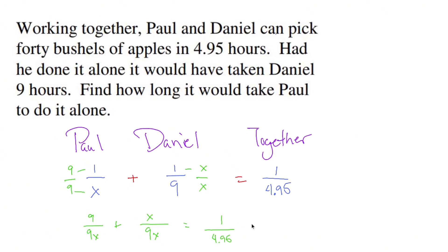Now that the denominators are the same, you're going to have the same denominator on the bottom and you're going to add 9 plus x, which doesn't change. On the right side we have equals 1 over 4.95. Now what we have is a proportion.